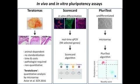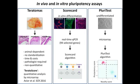However, the teratoma assay is animal-dependent, there is no standardization, numbers of cells and injection sites differ from lab to lab, it is time-consuming and expensive, requires a certified pathologist, and is non-quantitative. This latter issue has been addressed by the TERATO score, a quantitative microarray-based analysis. In the middle we have the ScoreCard in vitro assay, based on in vitro differentiations analyzed by real-time qPCR using 94 selected genes including self-renewal genes and genes representing the three germ layers. On the right, PluriTest analyzes undifferentiated cells by microarray and compares them to a reference database containing validated pluripotent stem cell lines as well as differentiated cells.